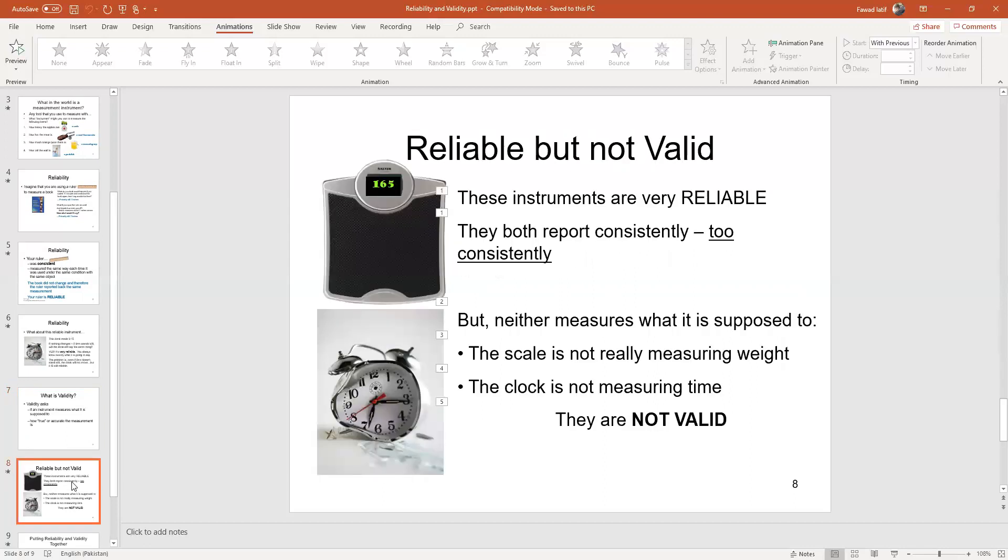So the instruments are very reliable - they are reporting too consistently - but they are not measuring what they are supposed to measure, so they are not valid. An instrument must be both reliable and valid.